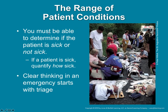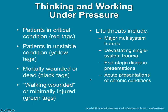There's a range of patient conditions. You must be able to determine if the patient is sick or not sick, and then quantify how sick they are. For patients who are sick, this allows you to make the best choices as to the care you must provide on scene or in the ambulance en route to the hospital. This process becomes more complicated when you have multiple sick or injured patients. Clear thinking in an emergency starts with the triage process — sorting patients into four categories based on the severity of their injuries.